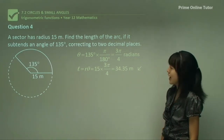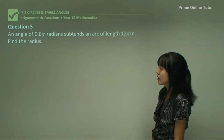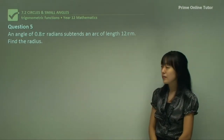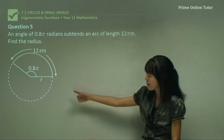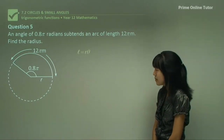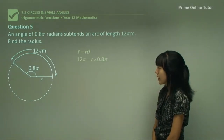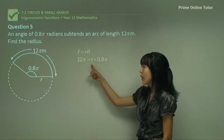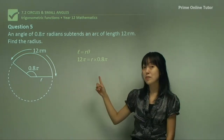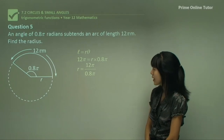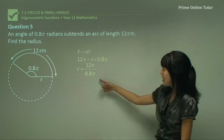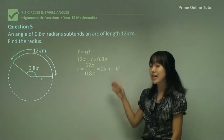Question 5. They've given us an angle which is kindly already in radians, so no converting needed, and an arc of length 12π. We have to find the radius. Using L equals R theta, we know L is 12π and we know theta but not R. We make R the subject by dividing throughout by 0.8π radians. We can then cancel the π's and get a simple answer of 15 metres.